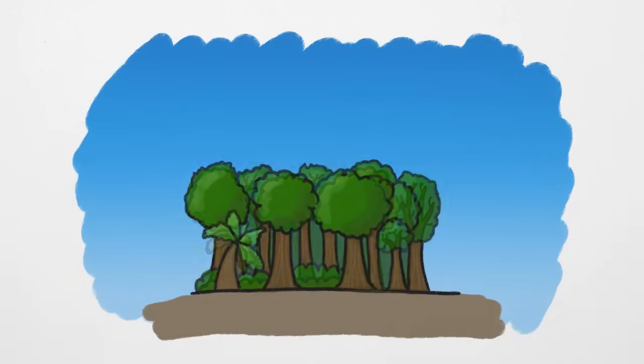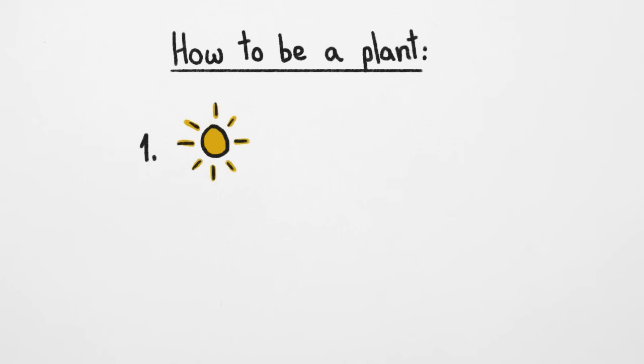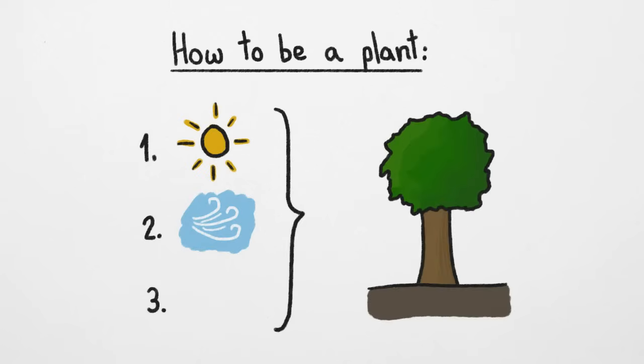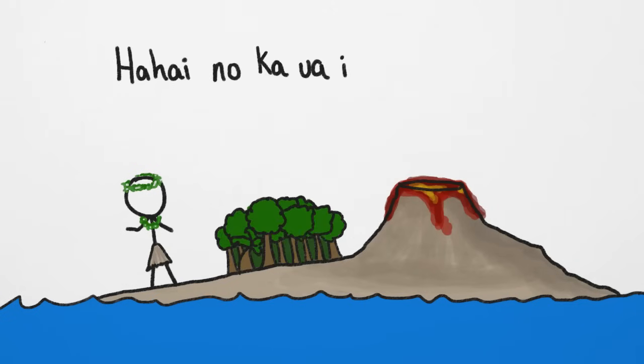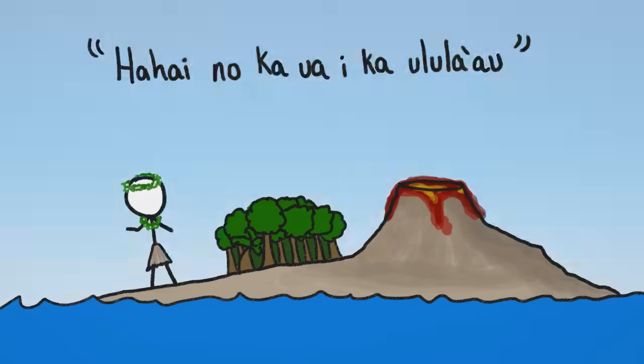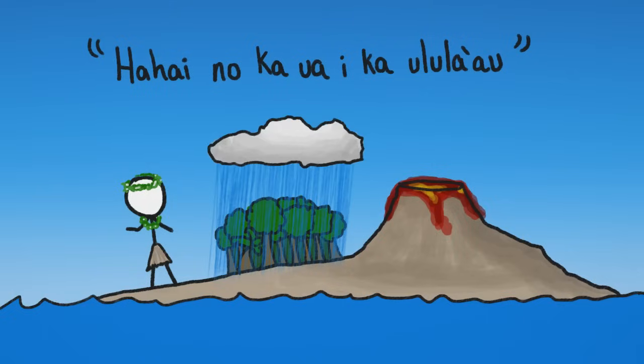A tropical rainforest without rain wouldn't be much of a rainforest. I mean, all plants need water to grow, and without it, they shrivel up and die. So what about the ancient Hawaiian proverb, ha-hai no ka ua i ka ulula au, which means the rain follows after the forest? How could that be?